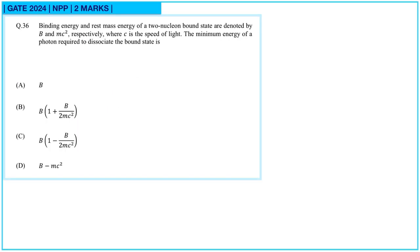Next: the binding energy and rest mass energy of a two-nucleon bound state are denoted by B and Mc² respectively, where C is the speed of light. We need to find the minimum energy of a photon required to dissociate the bound state. This is a two-nucleon bound state (deuteron), and the photon separates it into a proton and a neutron.